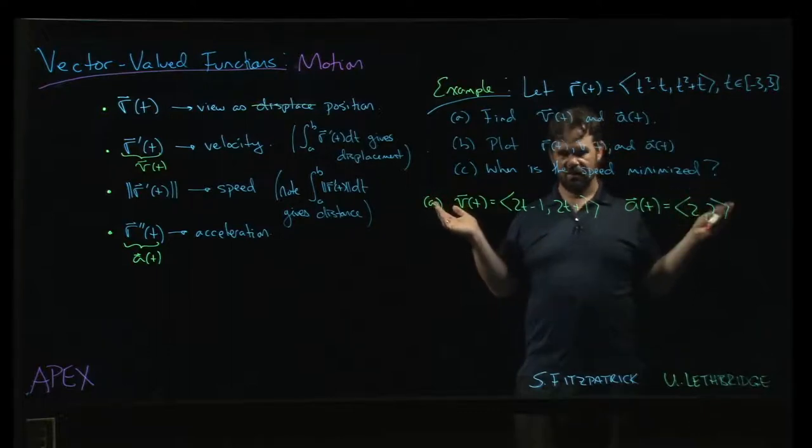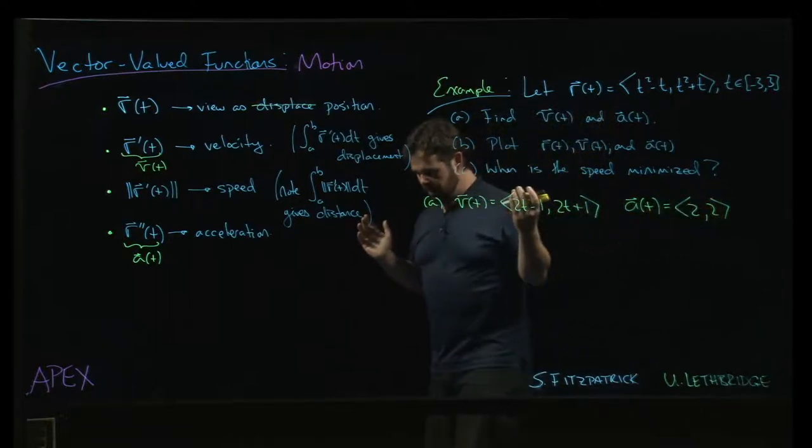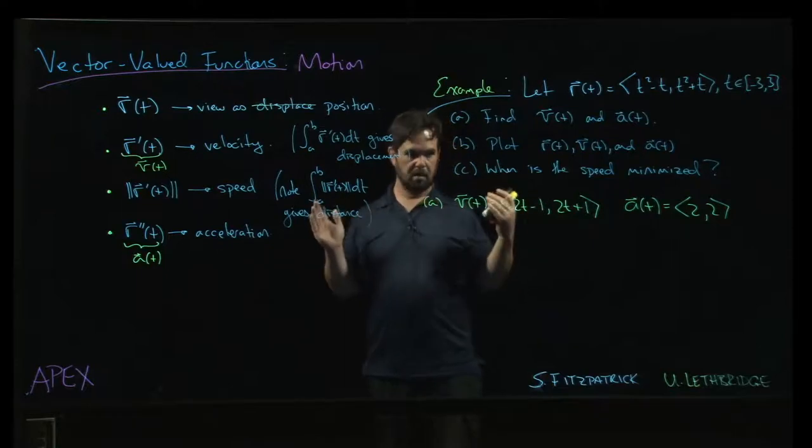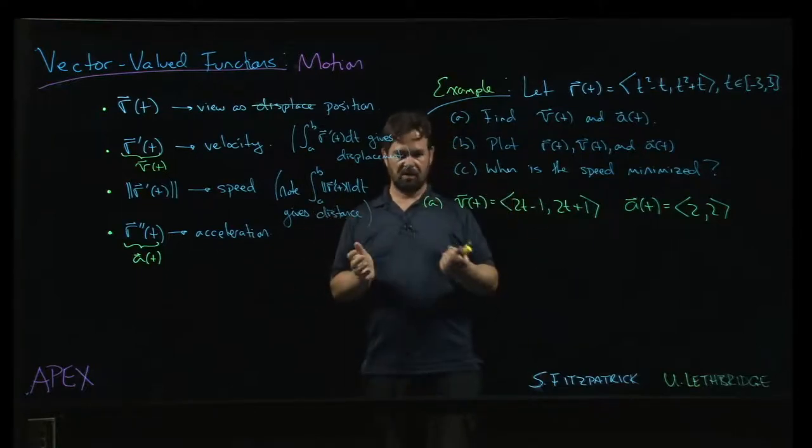And velocity is a vector quantity. It doesn't really make sense to talk about a vector having a minimum, right? Only the magnitude makes sense.